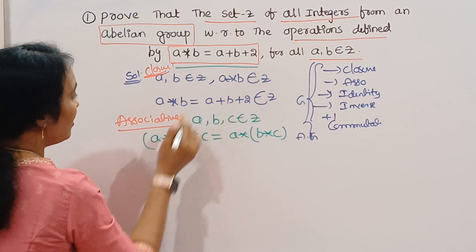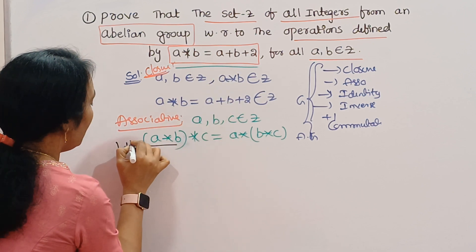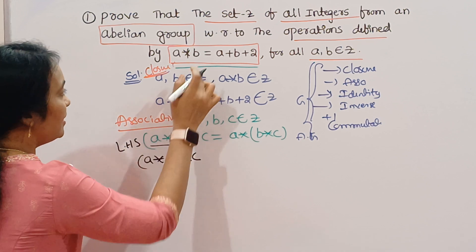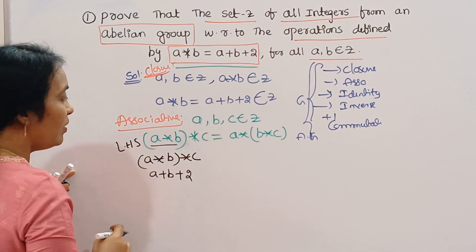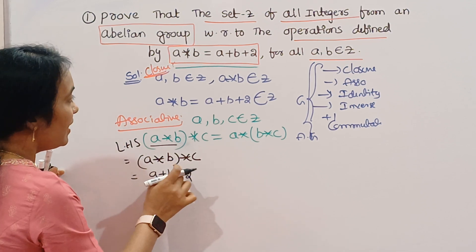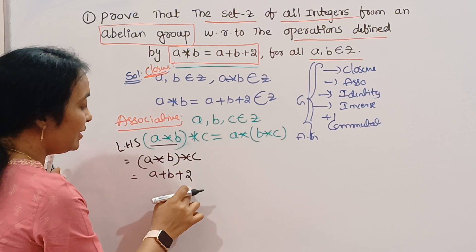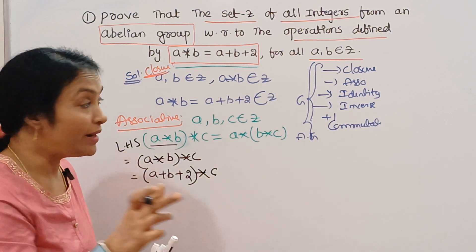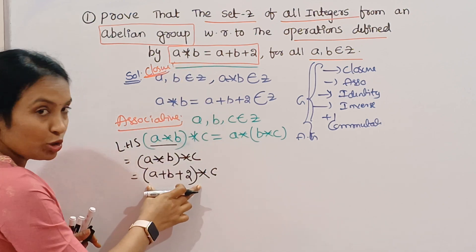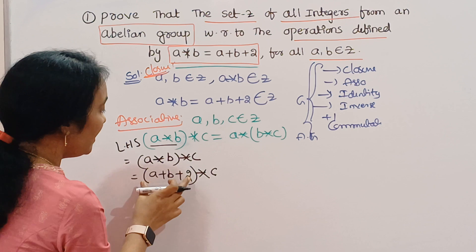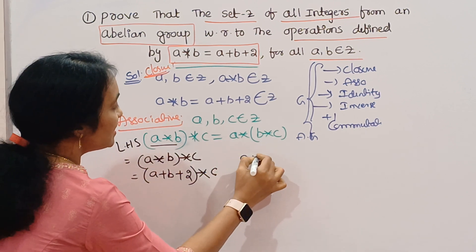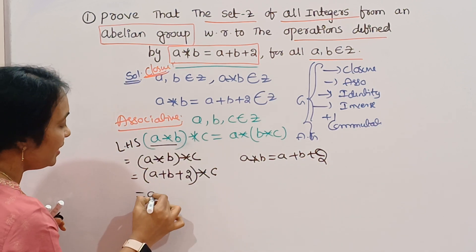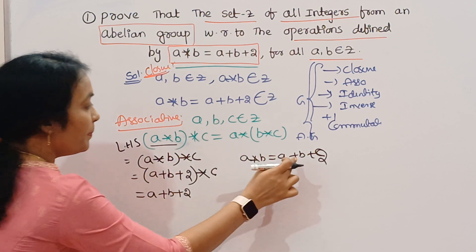A star B — what is the meaning of A star B? A star B is A plus B plus 2. Now LHS: (A star B) star C. A star B is A plus B plus 2, okay? Now we have (A star B) star C. A star B is A plus B plus 2, and then star C. A star B is A plus B plus 2.